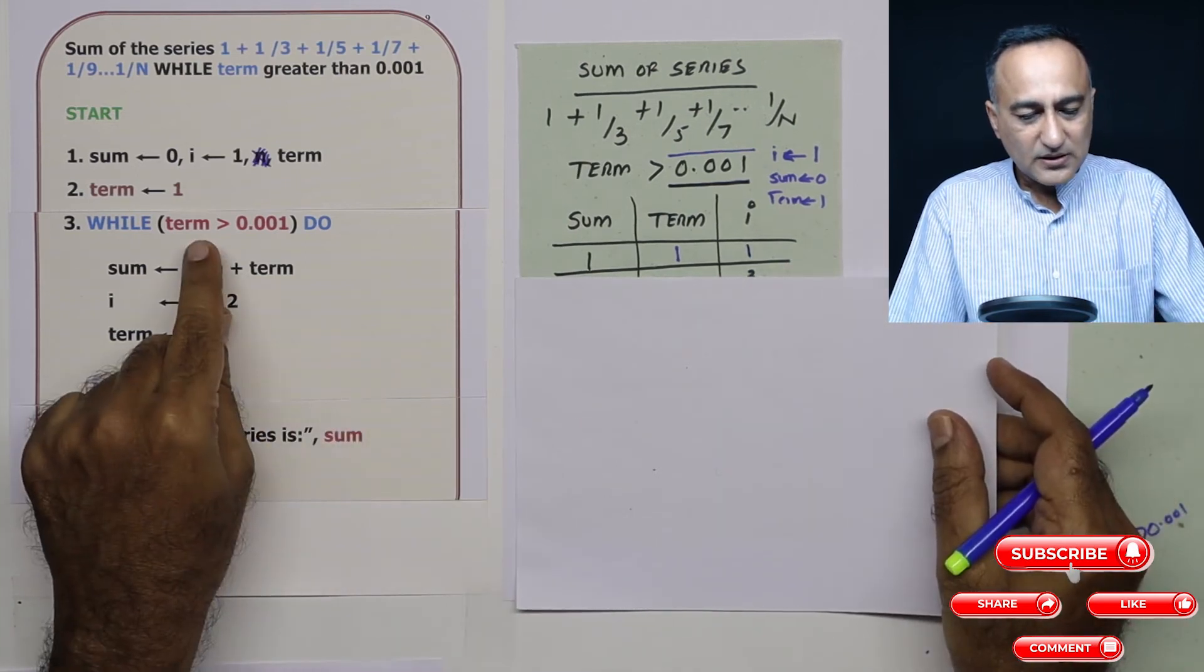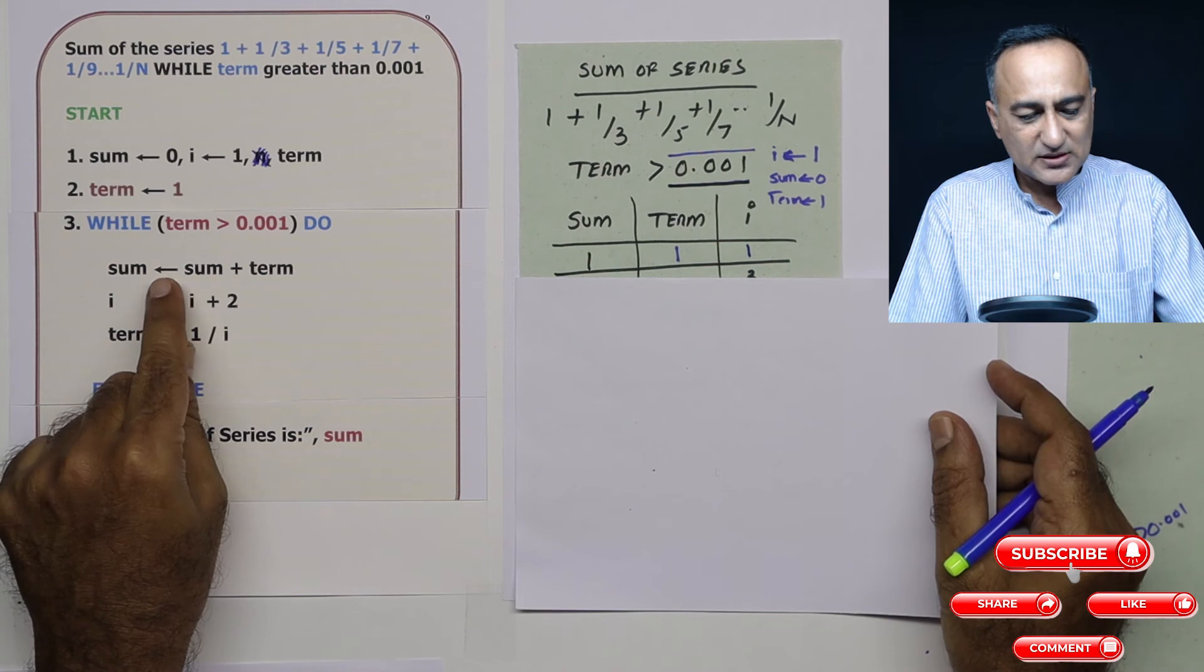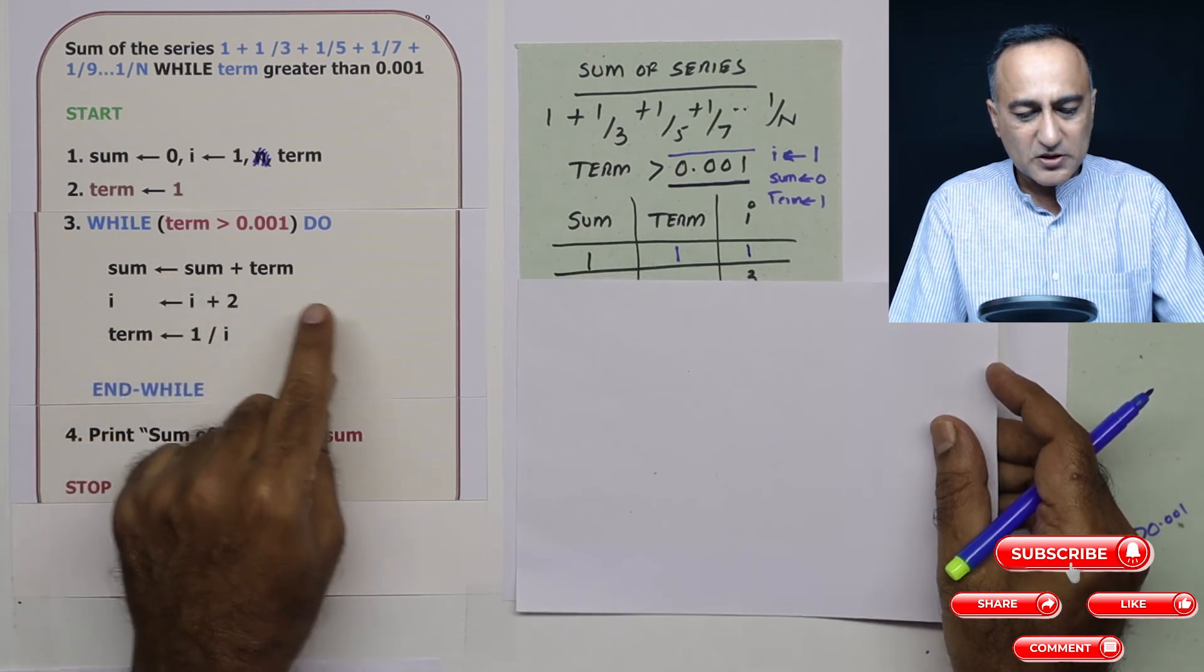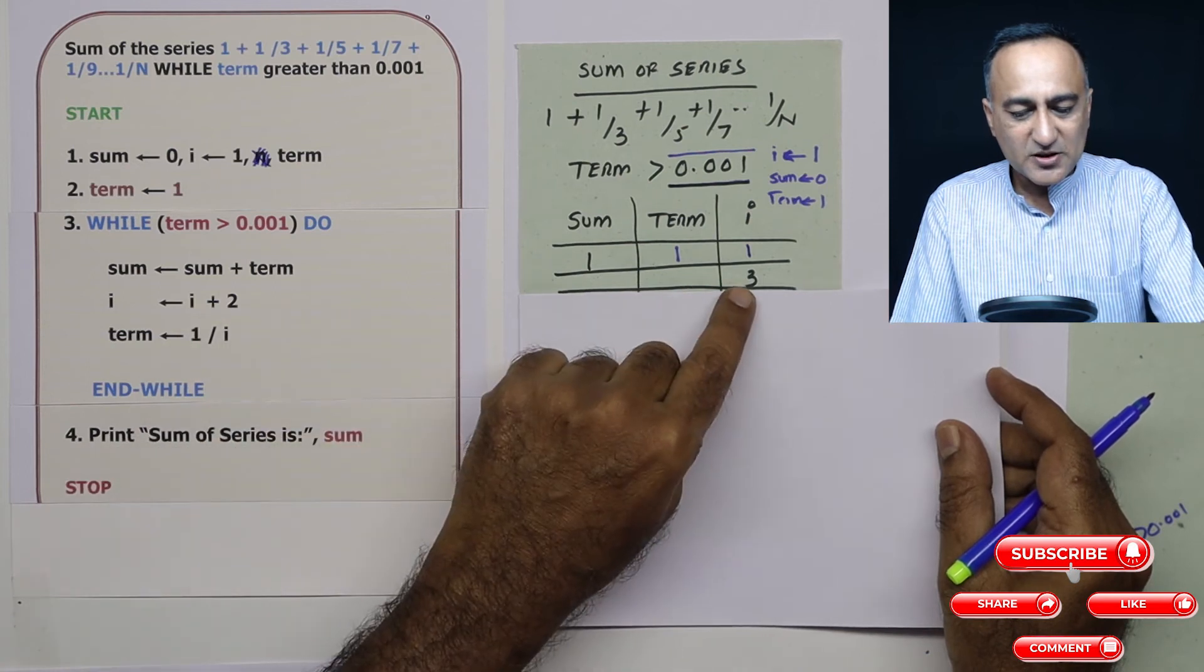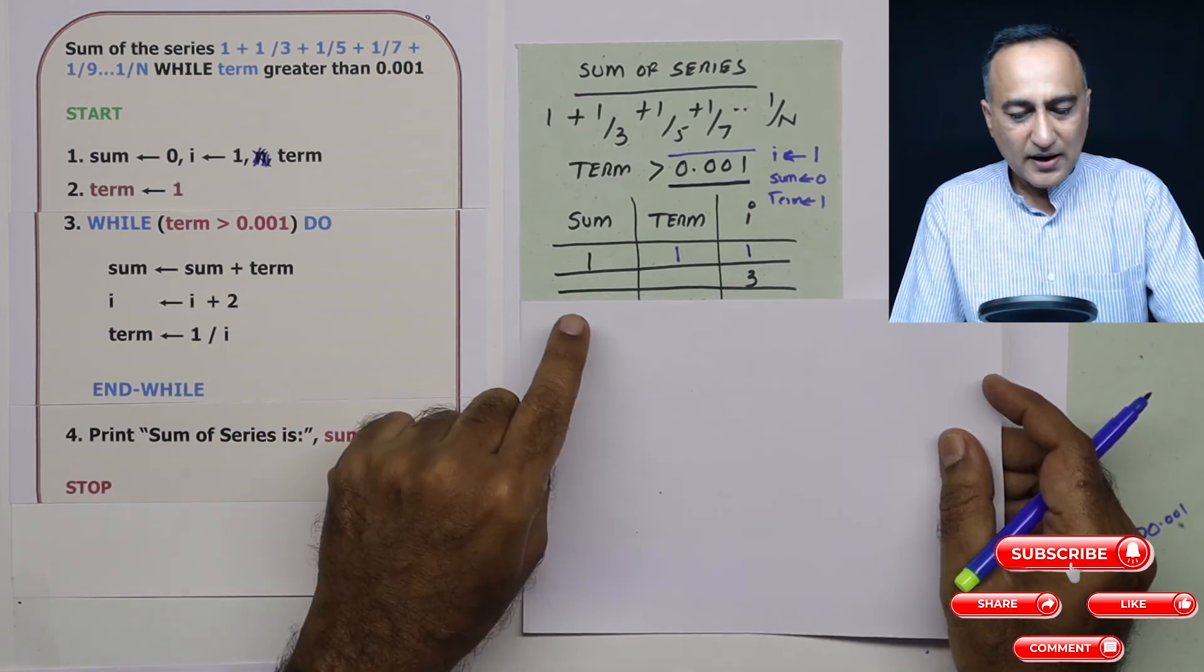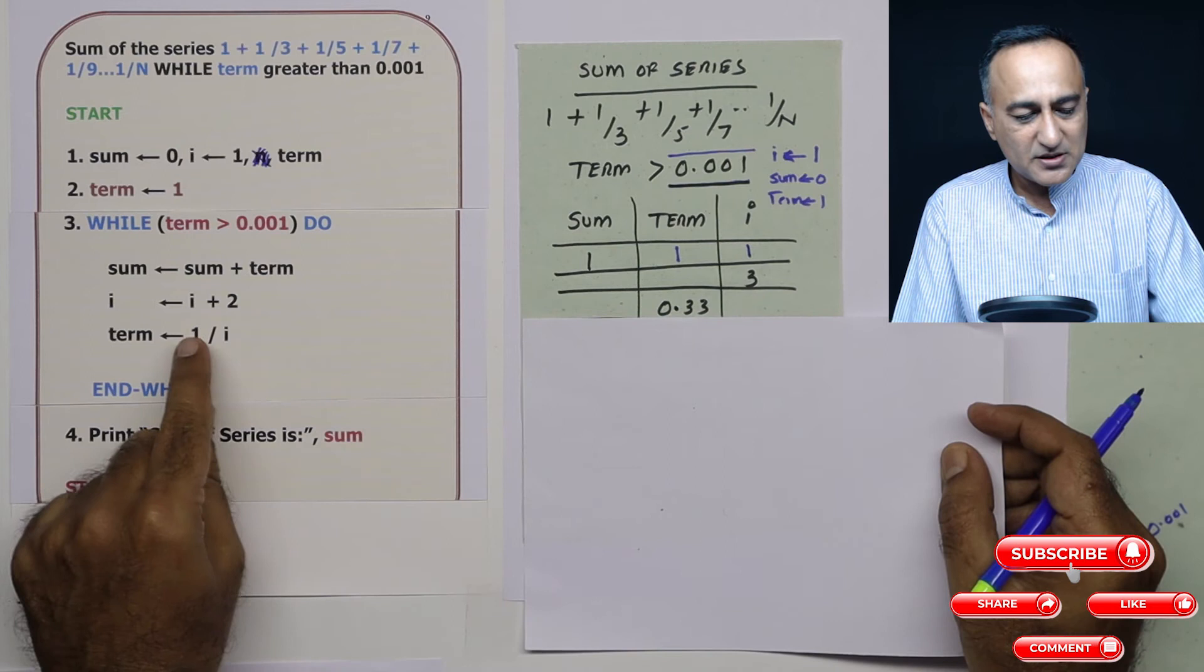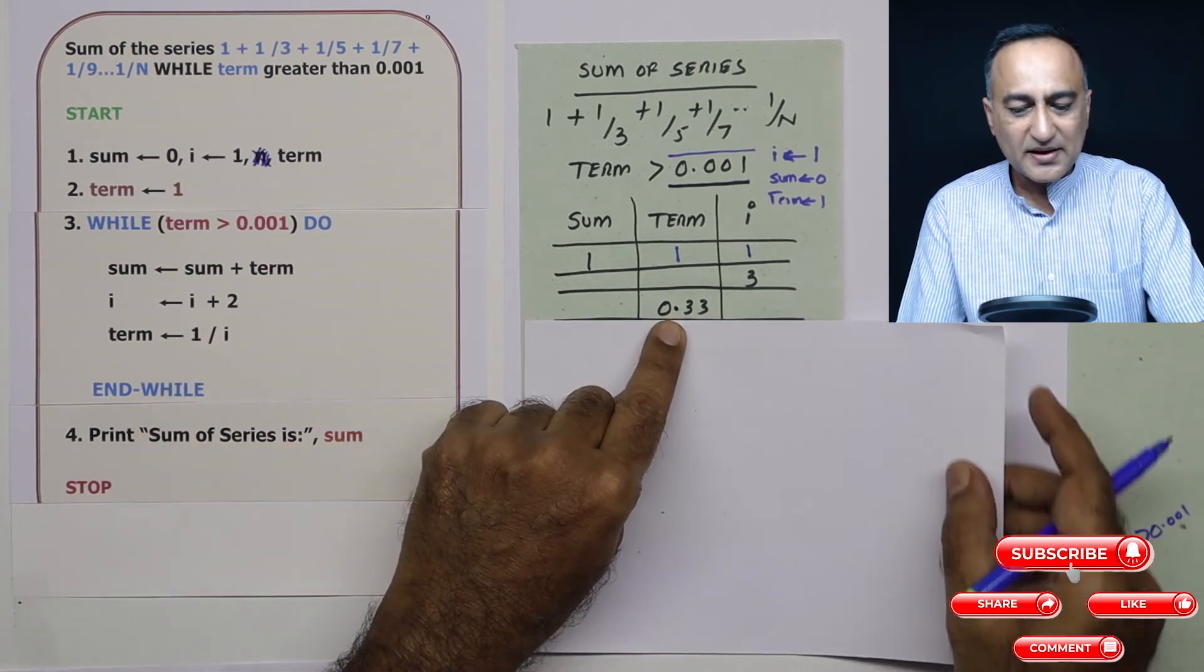Then since 1 is greater than this one, sum is equal to 0 plus 1, so sum is 1. The value of i has now increased to 3. And what is the value of term? Term is 1 upon 3 is 0.33.